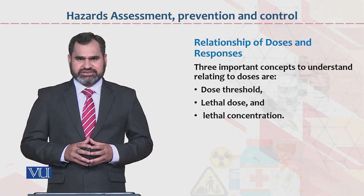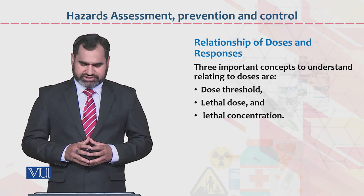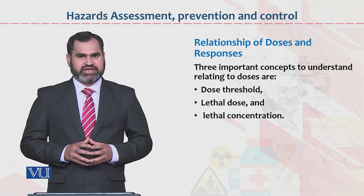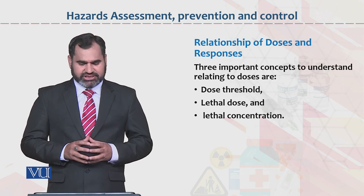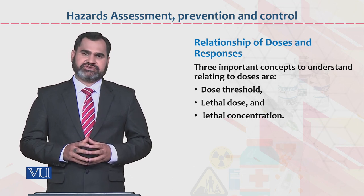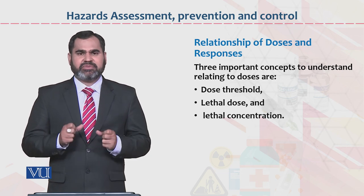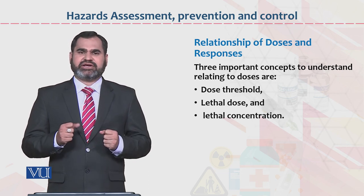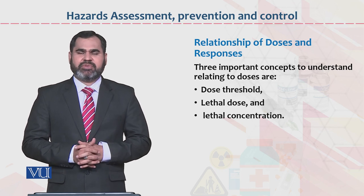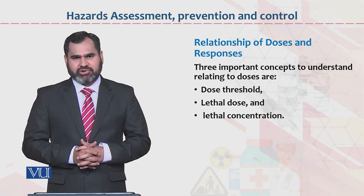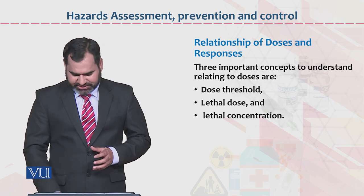Relationship of doses and responses has three important concepts. Number one: dose threshold. Number two: lethal dose. And last: lethal concentration. Yeh tineho chizein important hain — iska yeh matlab hai ke hemmeh maloom hona chahiye ke jo dose kisi ko di ja rahi hai, uska threshold level kya hai, minimum amount kitni hai, body size kya hai, body weight kitna hai — wos hisaab se hum in cheezon ko use karte hain.